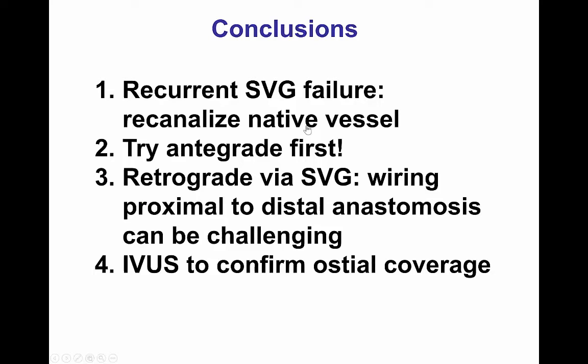In summary, in patients who have recurrent saphenous vein graft failure, re-canalyzing the native vessel can be a preferred treatment strategy because of the much lower risk both for the procedure itself and for restenosis. It may be worth trying antegrade even in cases that appear to be straightforward retrograde, because sometimes we get surprised — as in this case — and the antegrade wire successfully crosses through the occlusion.